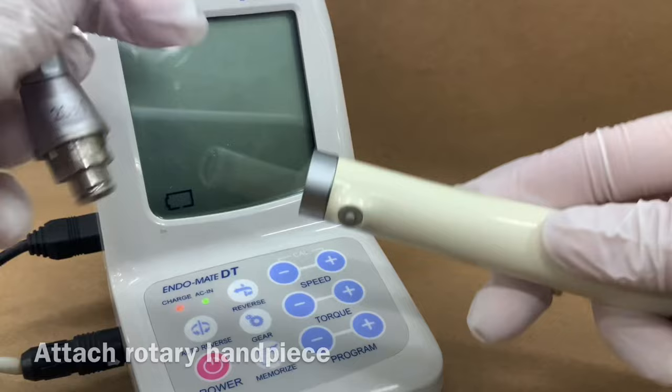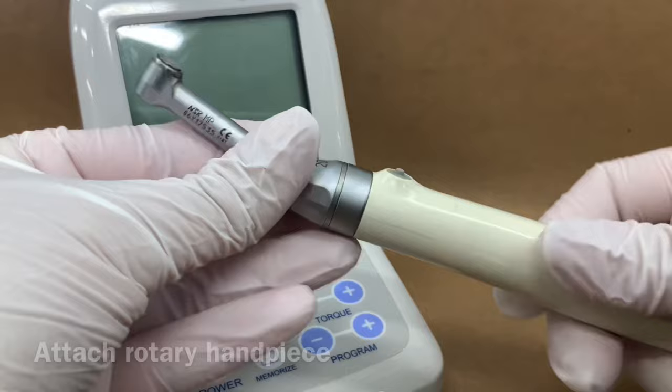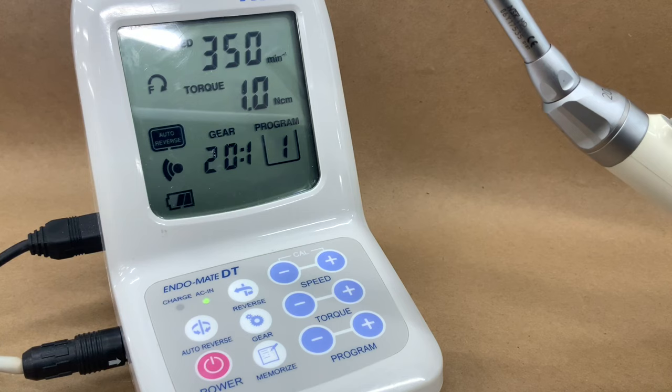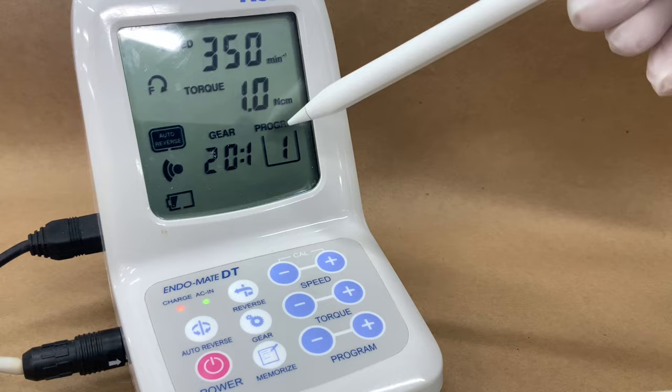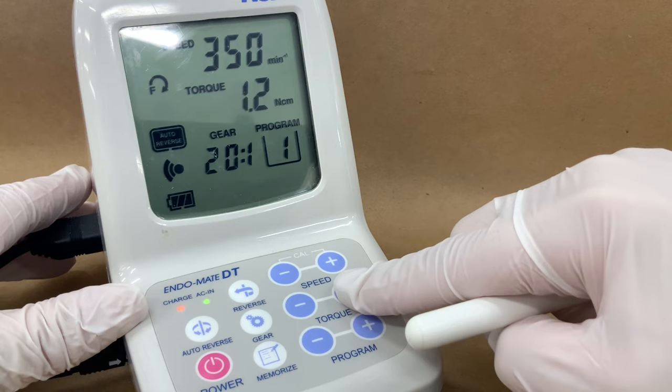The rotary handpiece must be attached to the handle. It can be attached in different positions with respect to the push button, depending on the angle that you need. To turn the unit on, hold down the power button. Look at the settings displayed on the screen, including speed and torque. These can be adjusted using the plus and minus buttons.